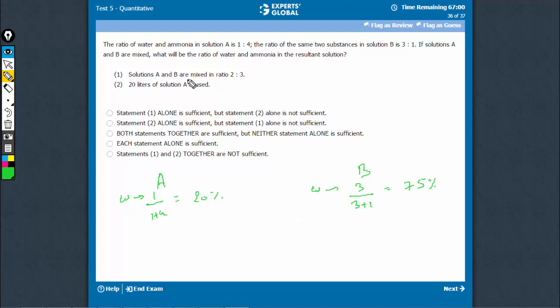Statement 1 says solutions A and B are mixed in ratio 2:3. If this is known, we know that A has 20% water and B has 75% water, and they are mixed in ratio 2:3.